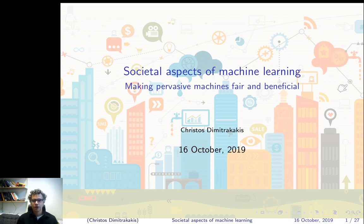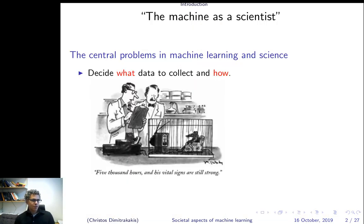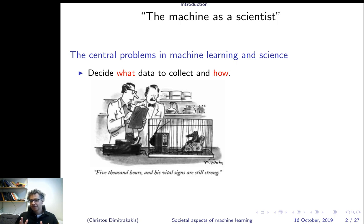I would like to talk about social aspects of machine learning — how to make pervasive machines fair and beneficial. Let's start with: what is machine learning? Why would you think that machine learning is similar to science? Because, first of all, we have the same problems.